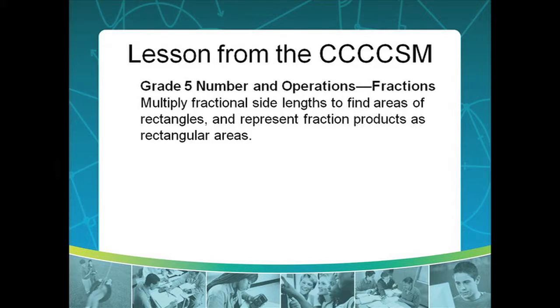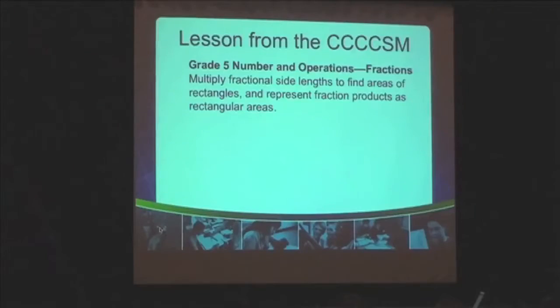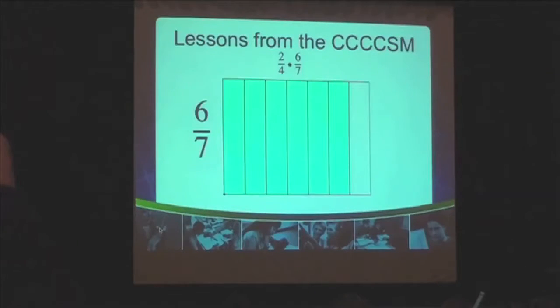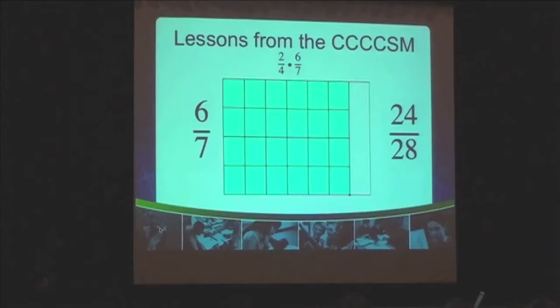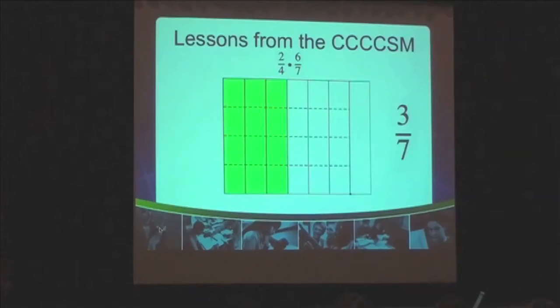The Common Core tells us that in grade 5, students will represent fraction products as rectangular areas. I'm going to attempt to show you my interpretation of that in the next 30 seconds. So we're going to start with a whole rectangle divided up into 7 strips. Take 6 of them to represent 6 sevenths. Now I'm going to divide horizontally into 4 strips, so now I have 24 twenty-eighths. Those are equivalent fractions because it's the same part of the same whole — same area. But I only want 2 fourths of my 6 sevenths, so I'm going to take 2 of those 4 rows and shade those. And that's actually my answer: 12 twenty-eighths. If we had more time, I would show you how we could rearrange those squares to show that that's equivalent to 3 of my original 7ths.